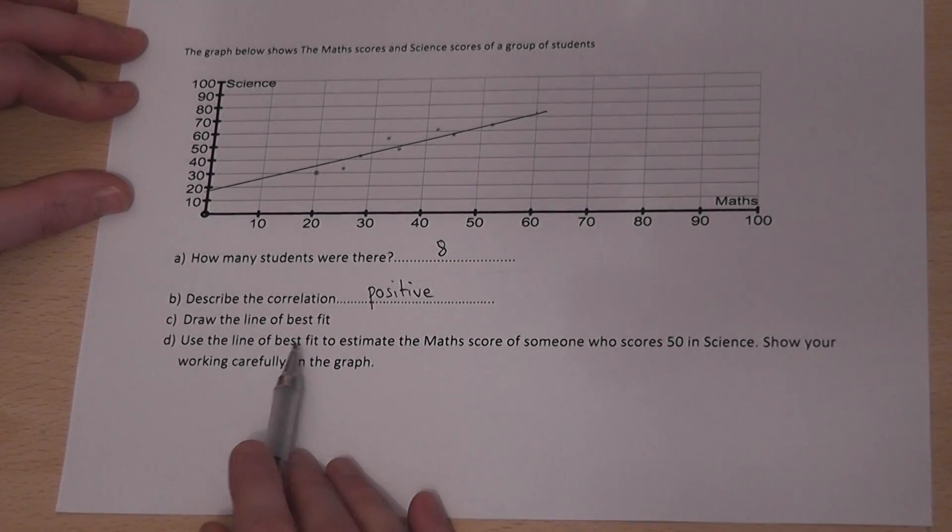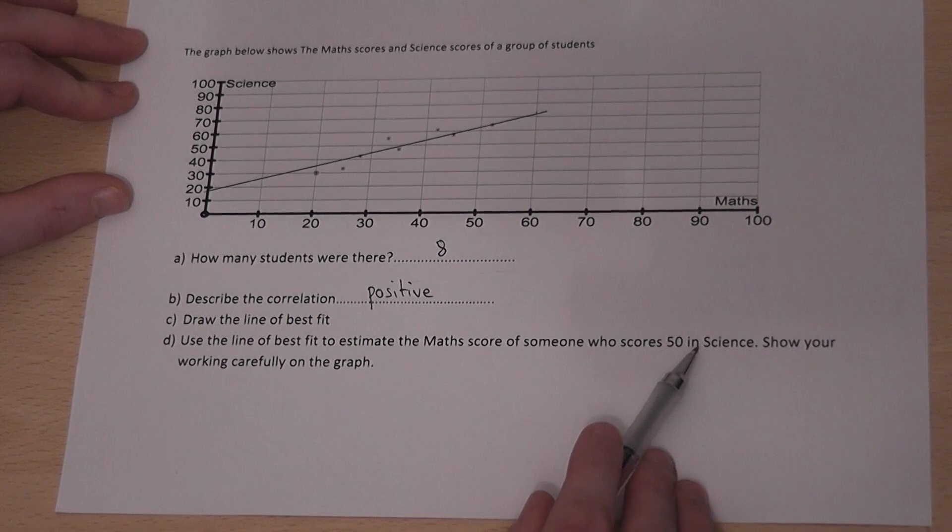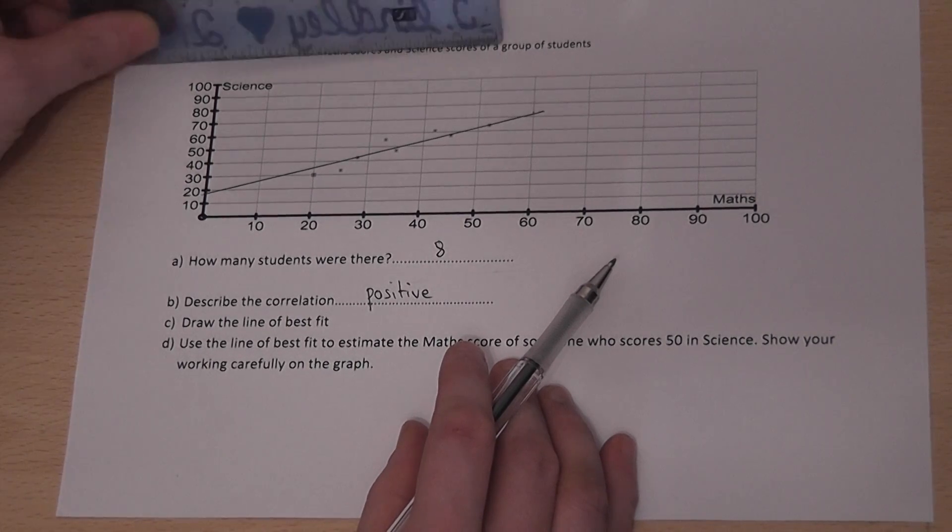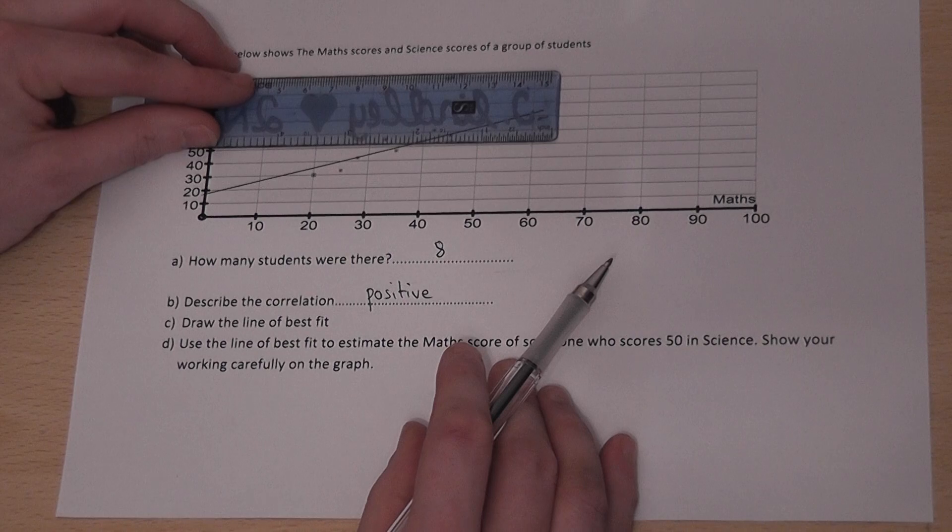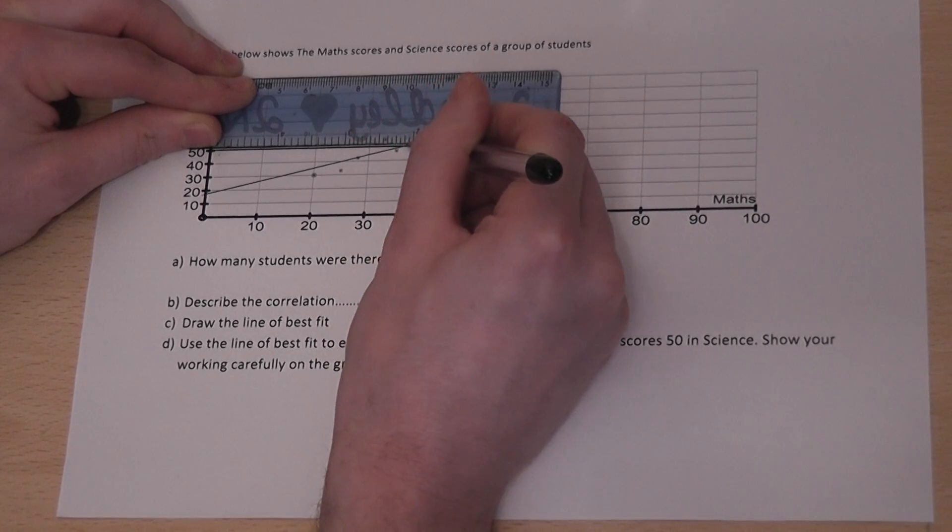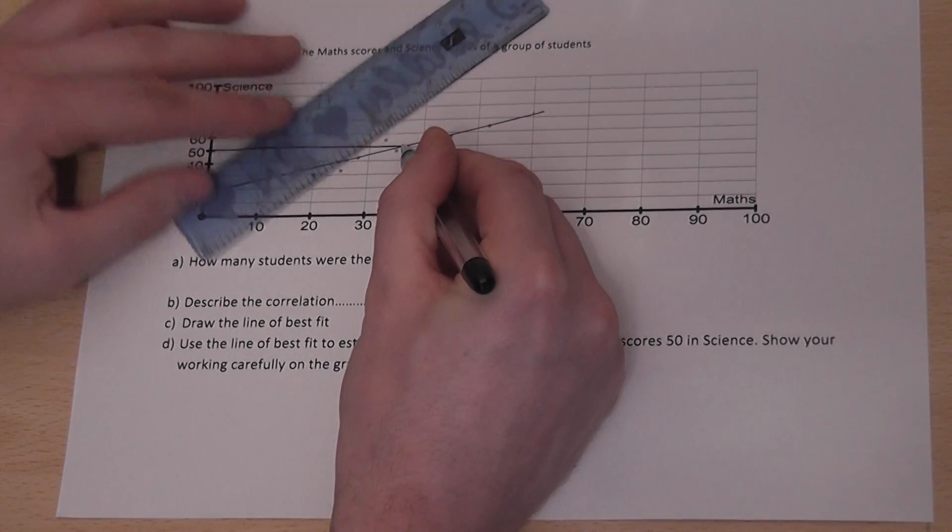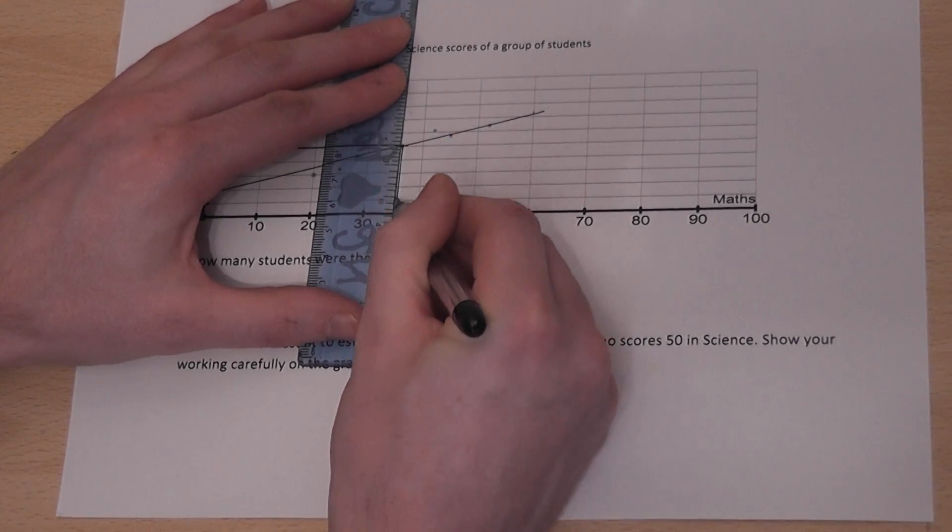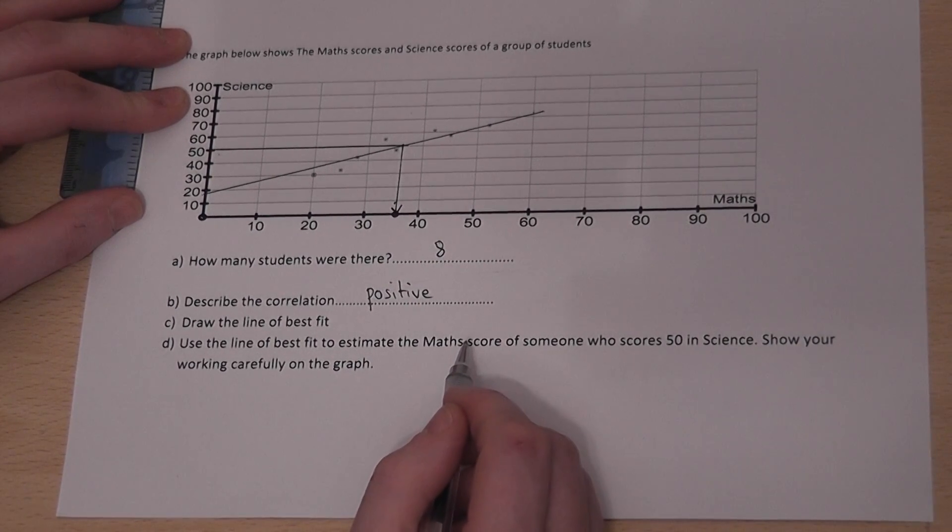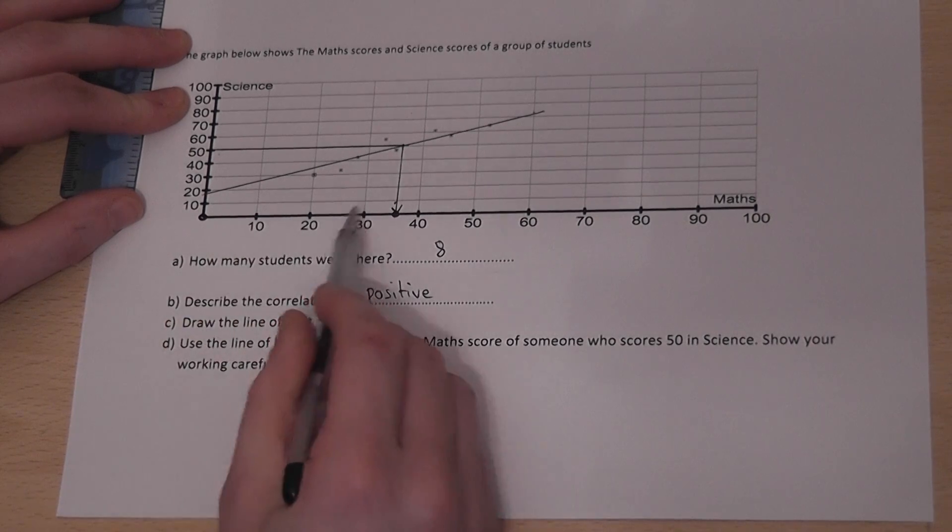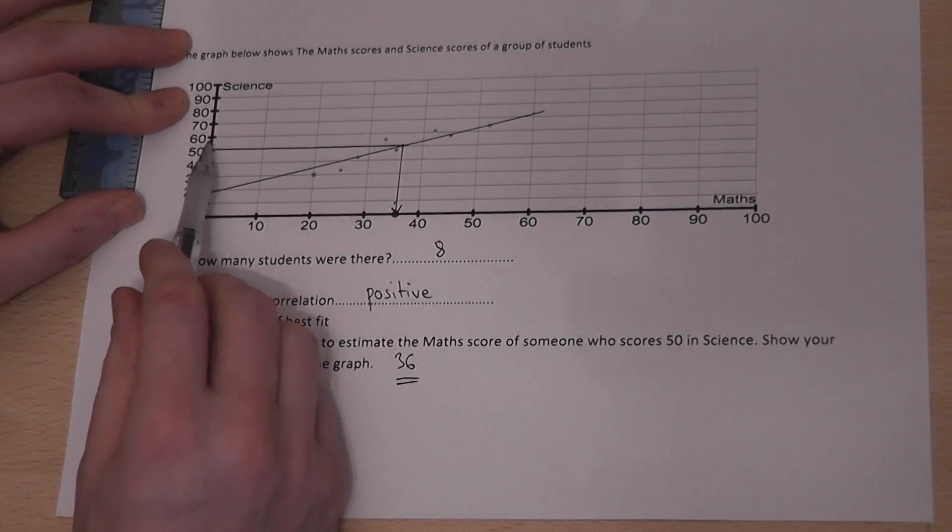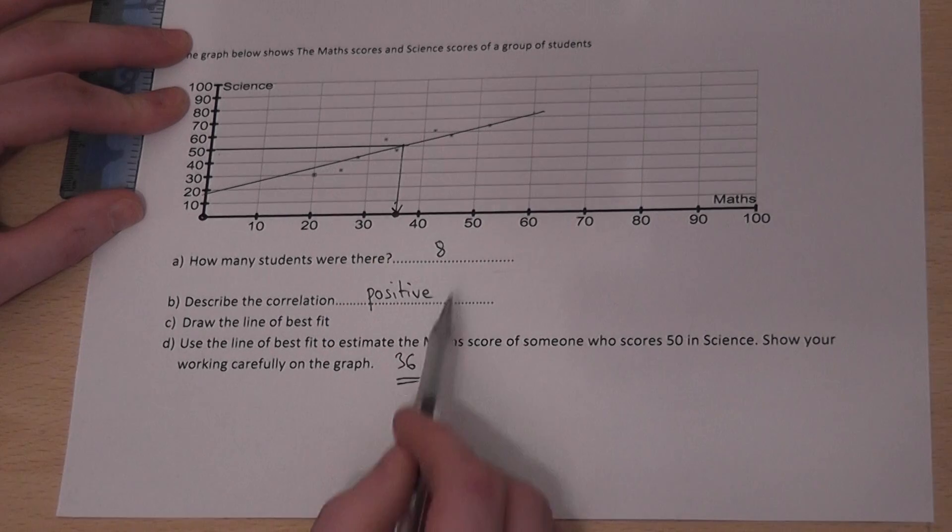So for example, if I knew a student scored 50 in science, I could estimate that pupil's maths score by doing the following. Now it's important in an exam to do this properly. So I get my ruler and go to 50 on the science score. I then draw a line across from 50, a very visible line, until I hit the line of best fit. I then draw a line down to the maths. And at this point here will be an estimate for that student's maths score. Now normally you'd have a better scale on your axes, but I can see that's roughly 36. So a student who scored 50 on science would expect to score roughly 36 on maths.